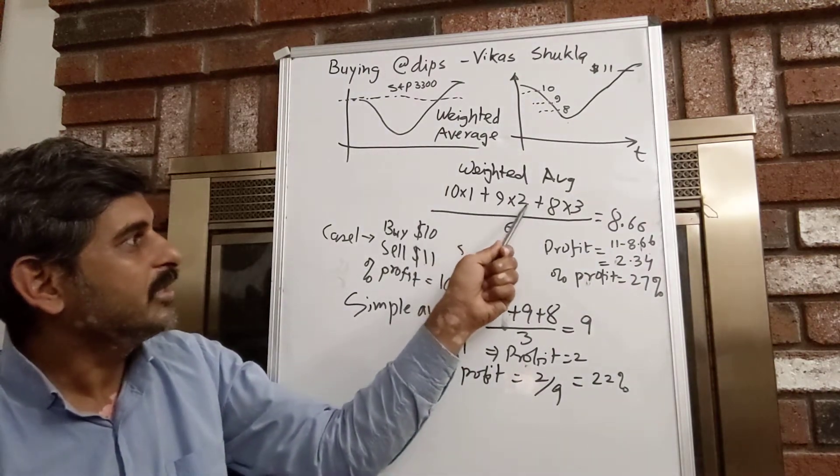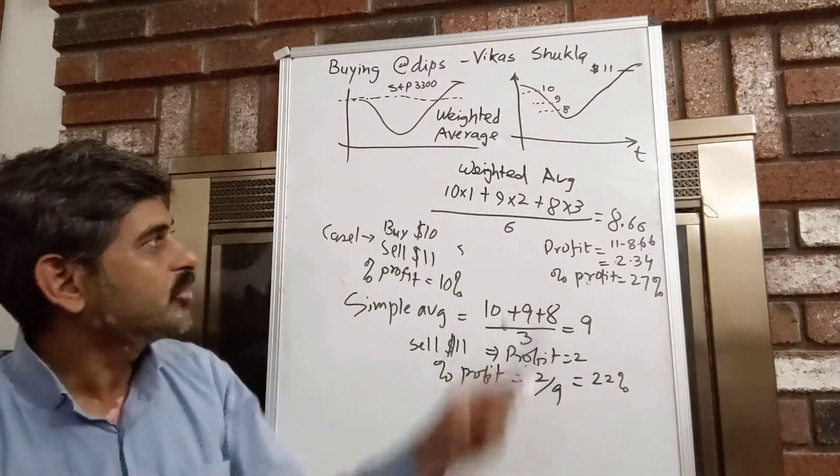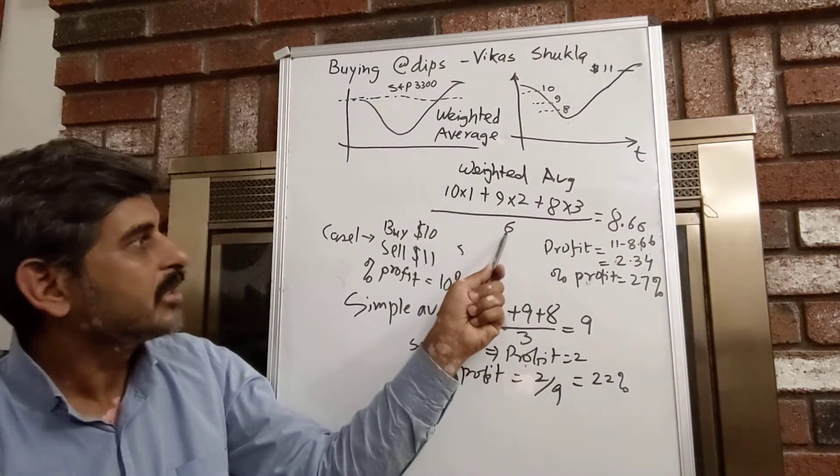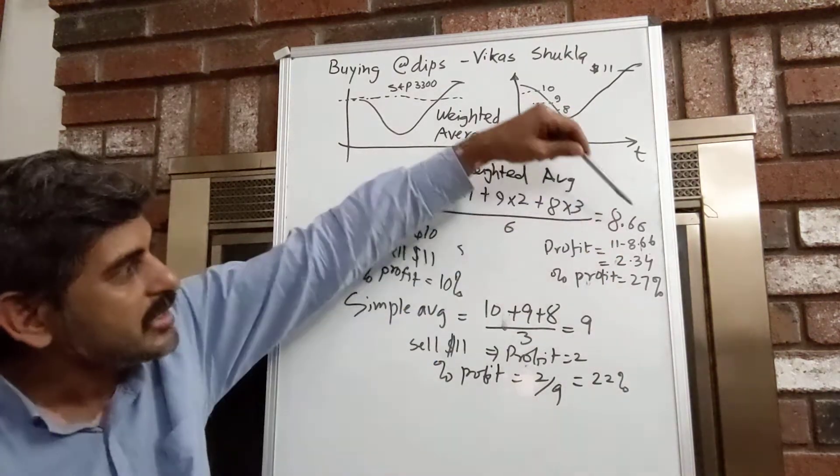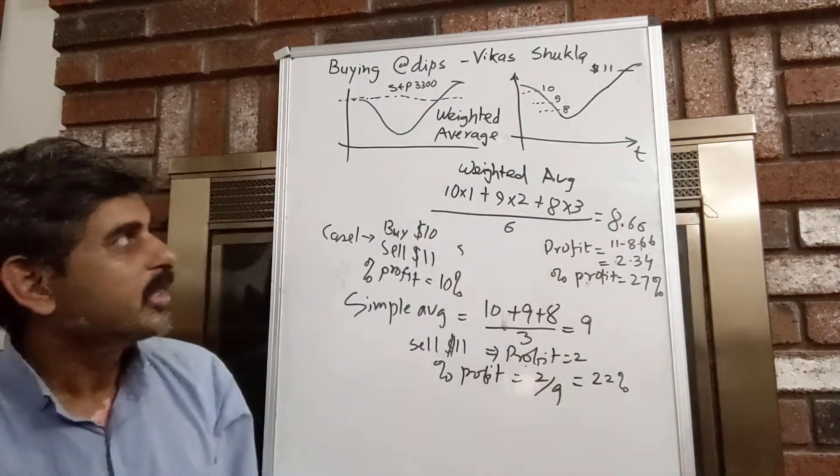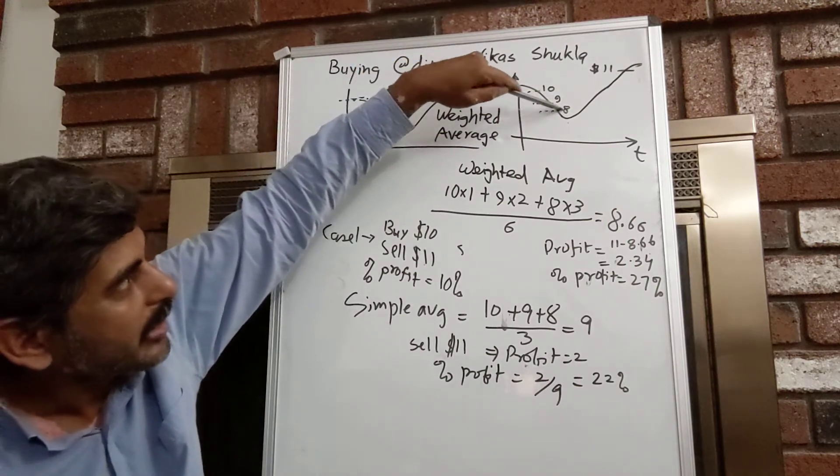And if you do the math, this is 18 plus 24, it's 42 plus 10, 52 divided by 6, it's 8.66. So this is your average price of one stock. It's towards the lower end of this thing, you are here.